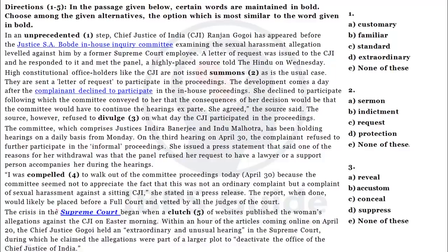Direction: questions one to five — in the passage given below, certain words are maintained in bold. Choose among the given alternatives the option which is most similar to the word given in bold. So we have to look for the synonymous word — whichever word is written in bold. This type of question is called comprehensive synonyms. We go through and understand the meaning of this paragraph, and according to this paragraph we follow the synonyms and antonyms. This is a new pattern of SBI PO examination.